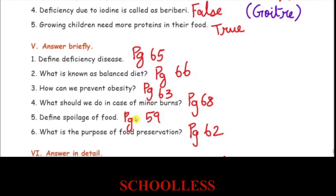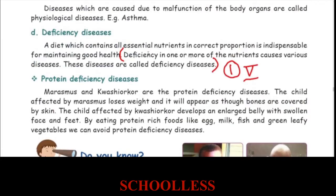Answer in brief: Define deficiency disease. Page number 65. Deficiency in one or more of the nutrients causes various diseases; these diseases are called deficiency diseases. Examples include beriberi, night blindness, and marasmus.